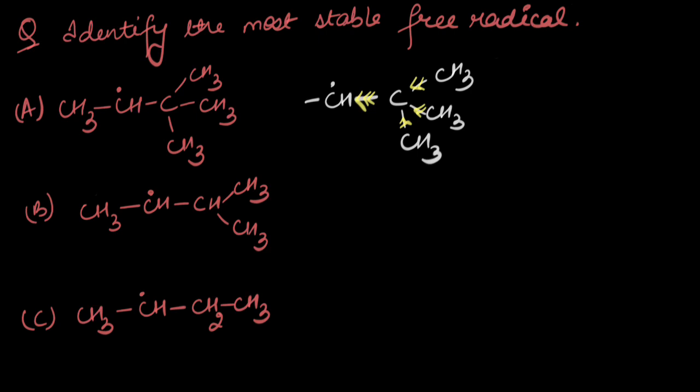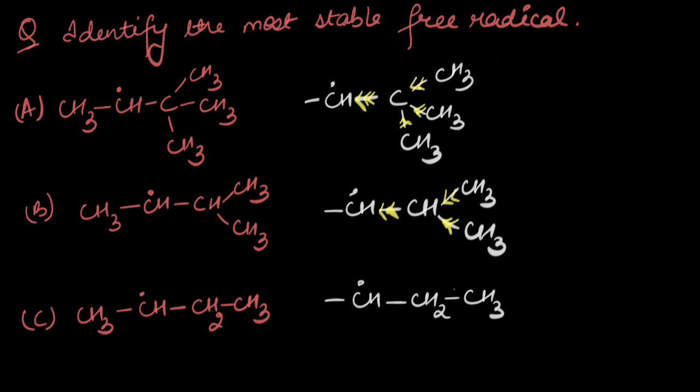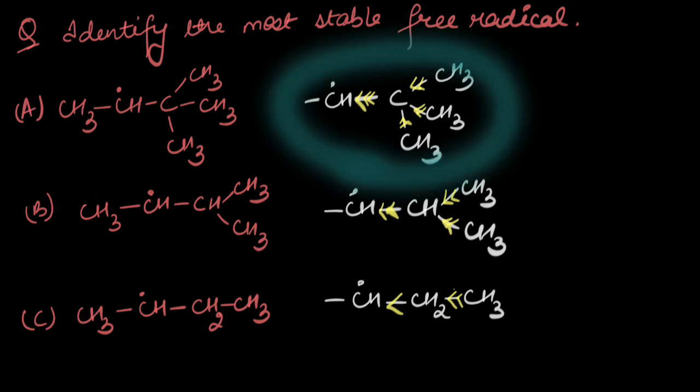In the first case, the carbon directly attached to the radical is receiving electron density from three methyl groups. In the second case, there are two methyl groups attached to that carbon — electron donating, but not as much as the first case. In the third case, there is just one methyl group attached to the carbon directly adjacent to the free radical. So the first case is the most donating and will stabilize the free radical the most — the most stable radical is the first one.